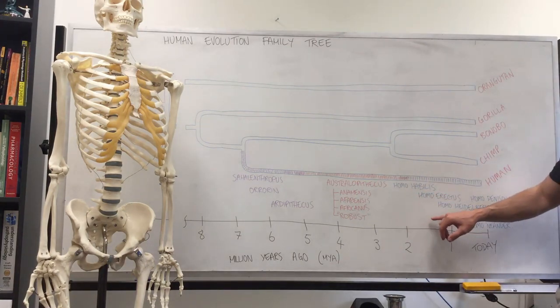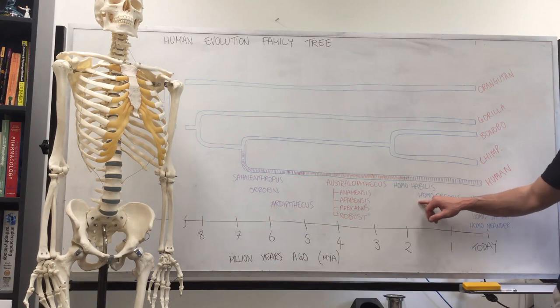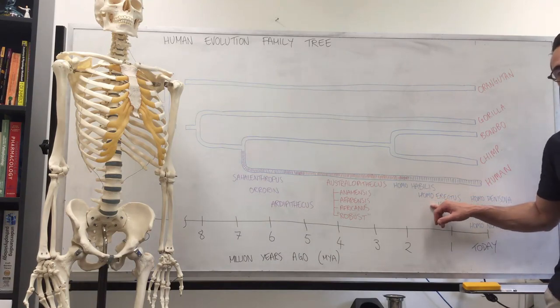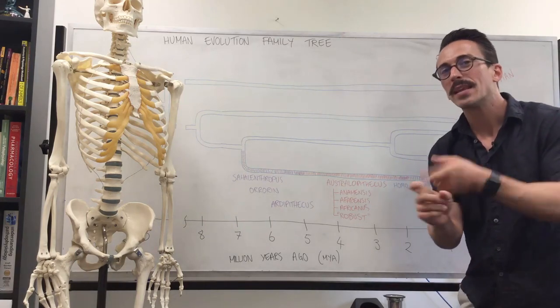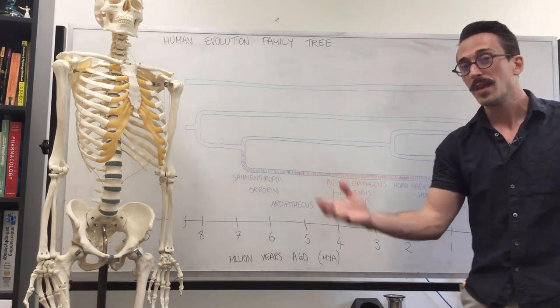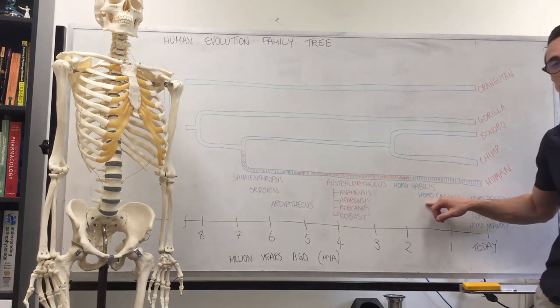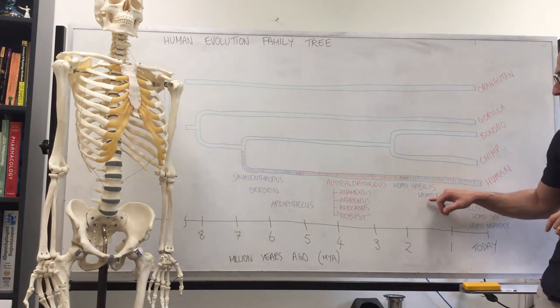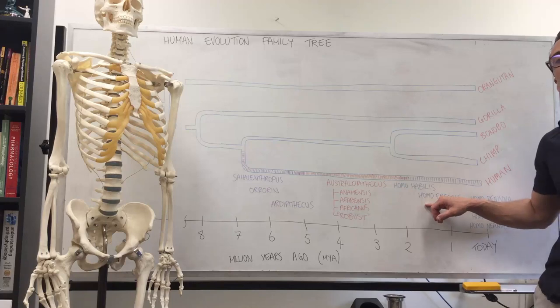At around about 1.72 million years ago, Homo erectus came onto the scene, and Homo erectus in Africa started to also use tools, but then started to spread out from Africa across Eurasia, and its brain size started to change. This is now when we're starting to get brain sizes closer to ours at around about 1200 to 1300 cc's.